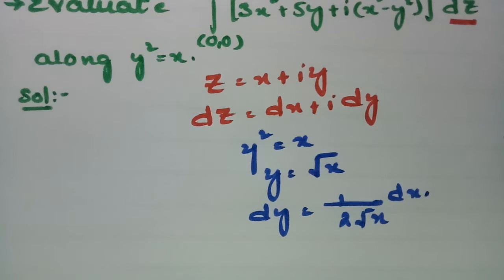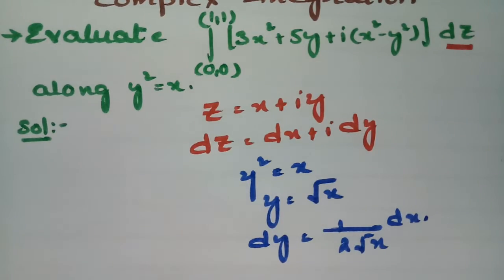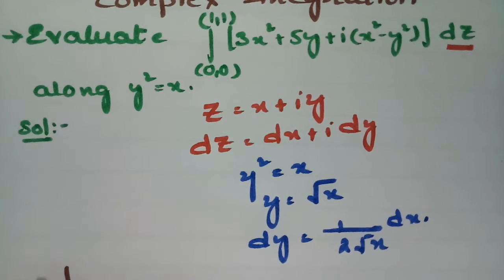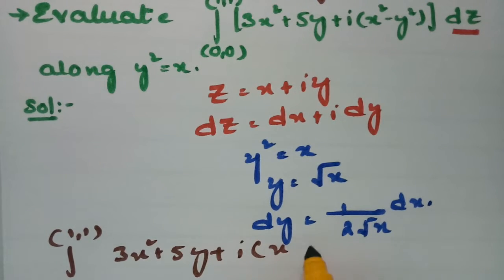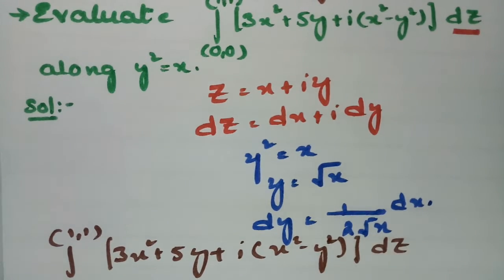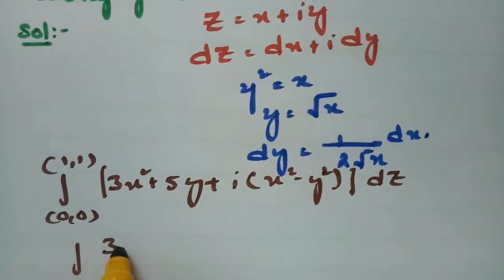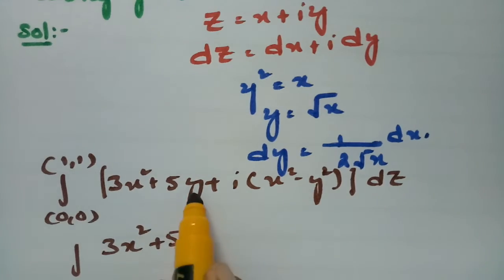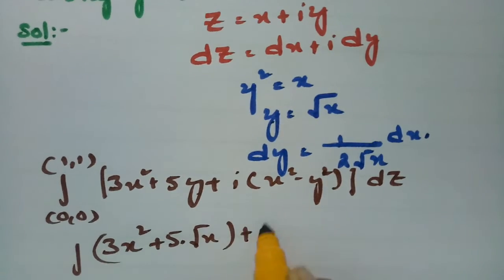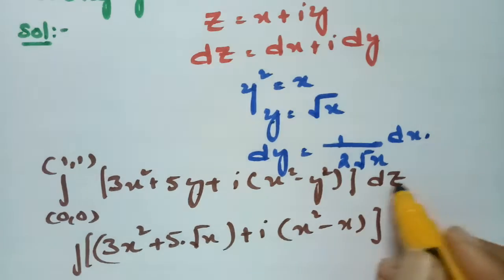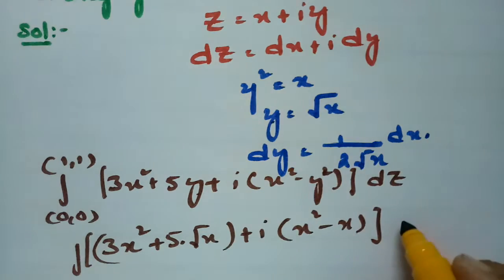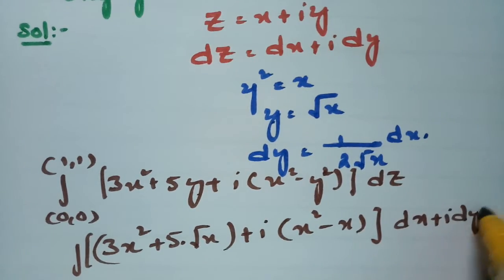Now the integral from (0,0) to (1,1) of 3x² + 5y + i(x² - y²) dz can be rewritten. Substituting y = √x and y² = x, and dz = dx + i·dy, we express everything in terms of x.